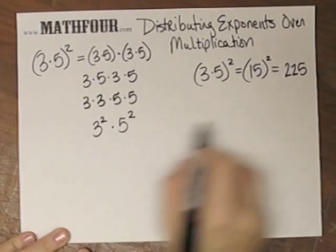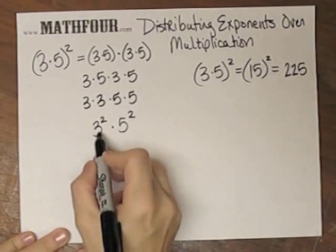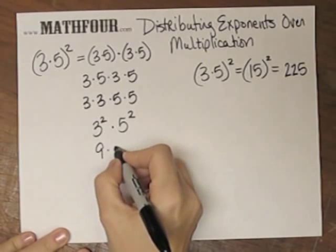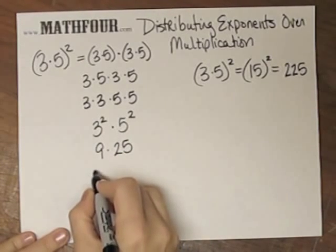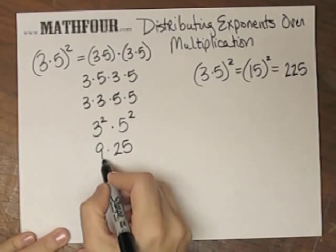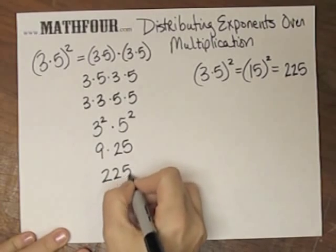The proof is in the pudding though, so we want to make it look like this. So this is 9 times, 5 squared is 25, and if I have 9 quarters, how many dollars do I have? Well, I have 2 dollars and 25 cents, so there's 225.